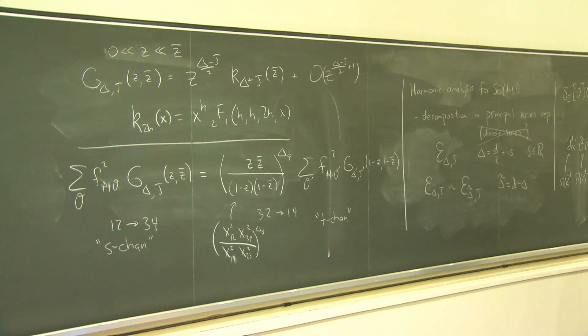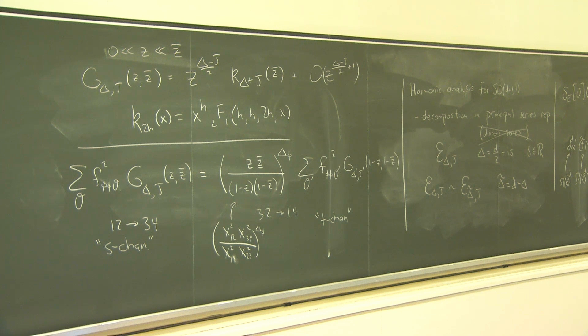C2 is the quadratic Casimir of the conformal group. Very explicitly, it's given by taking the conformal generators, summing over a product of all of them — there's typically a minus one-half in this formula — and you act on a state in some multiplet. C2 is the eigenvalue that you get back. The quartic Casimir is defined similarly.